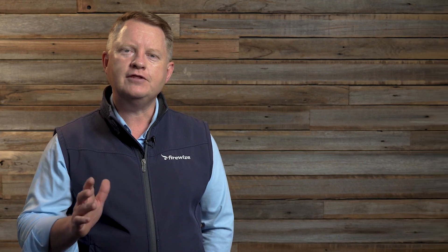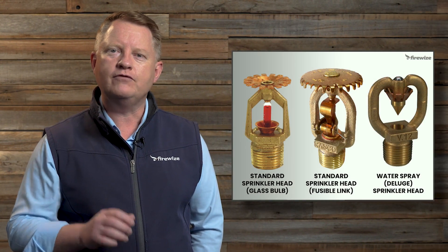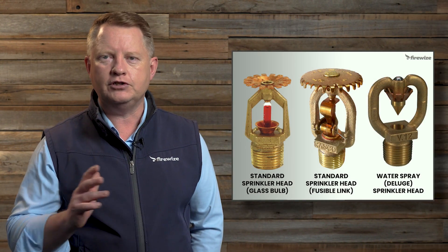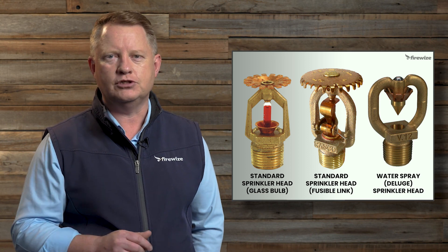A conventional sprinkler head is a type of valve that controls the flow of water to stop a fire. Unlike conventional movie wisdom, not all sprinkler heads operate at once, except for deluge type fire sprinkler systems used in special hazard applications, where the sprinkler system is designed for all of the sprinkler heads to activate at the same time. Check out the image on the right for an example of the visible differences between a conventional sprinkler head and a deluge sprinkler head.